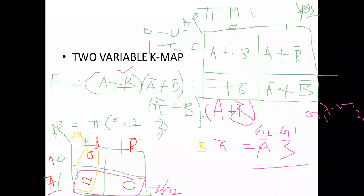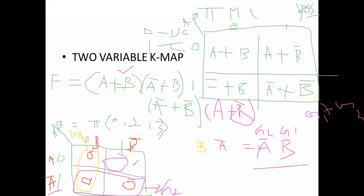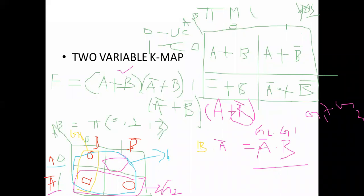If A plus B bar is also added, then a quad is possible. Totally quad is possible, so no separate groups — only one group, that is a quad group. Here the result: this group covers A plus A bar equals 1, and this group covers B plus B bar also. So totally you will be getting the result F is equal to 1.